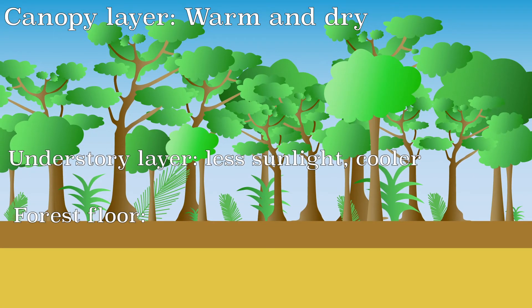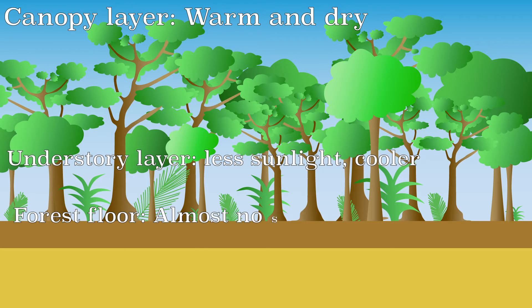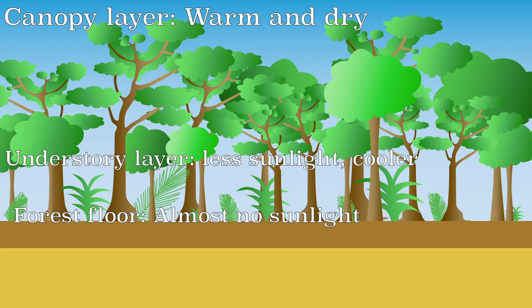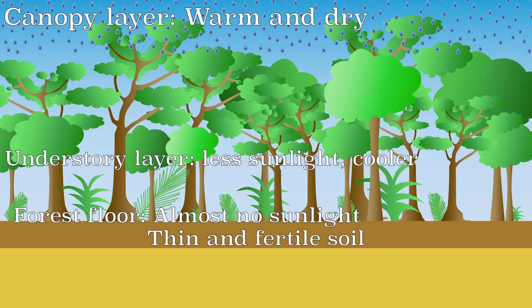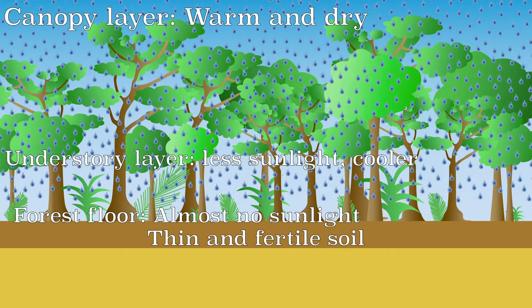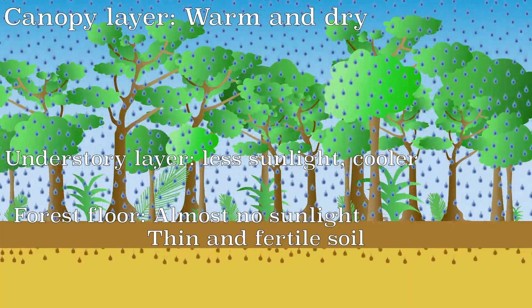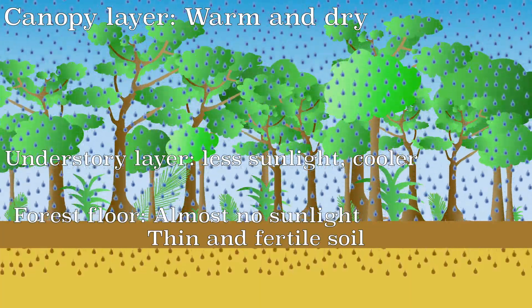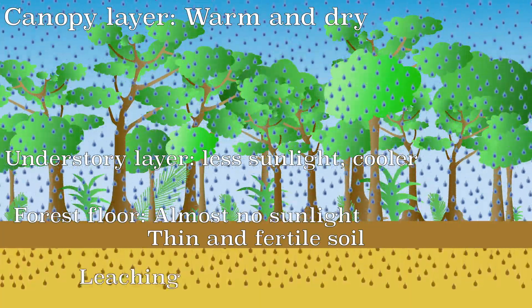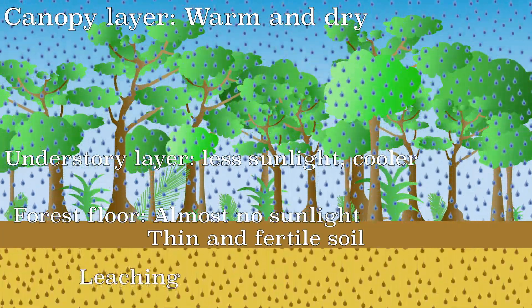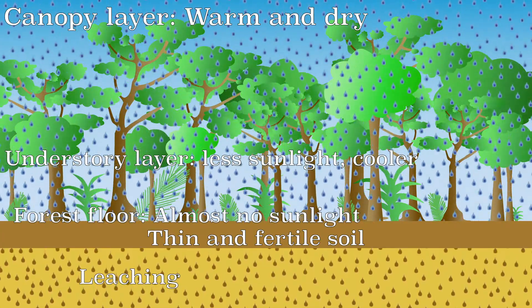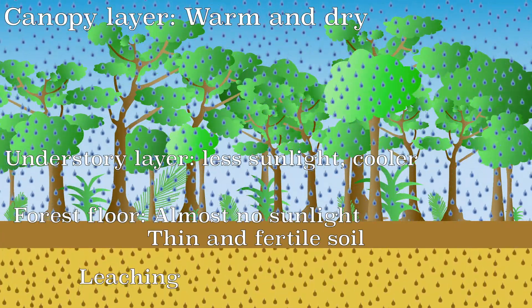The bottom layer is called the forest floor. Most of the sunlight is intercepted by the other layers. The forest floor is very fertile, but contrary to popular belief, very thin. Because it rains a lot in the tropical rainforest, water carries nutrients to the underground water supply. This is called leaching. The trees and plants are adapted to this and therefore absorb the nutrients quickly.